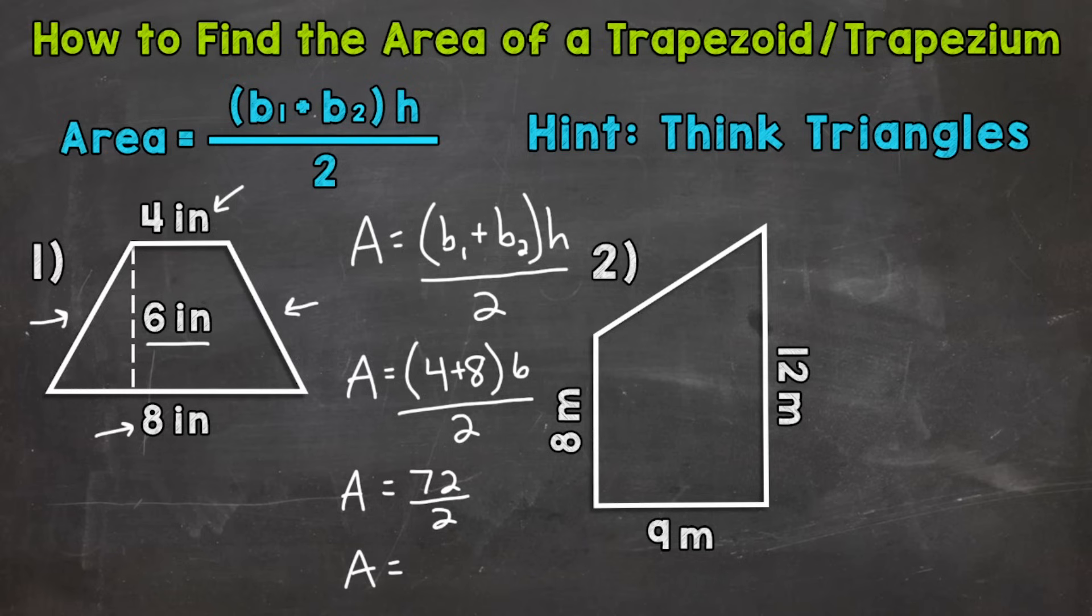Our final area is going to be 72 divided by two is 36. And this is square inches, because we're talking area. So 36 square inches for the area for number one.